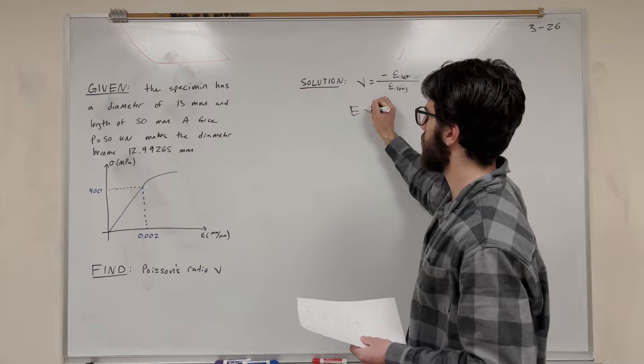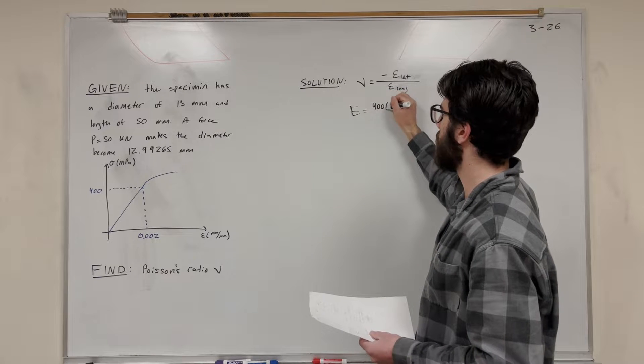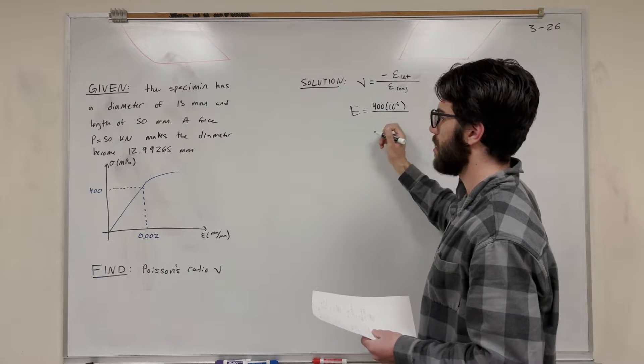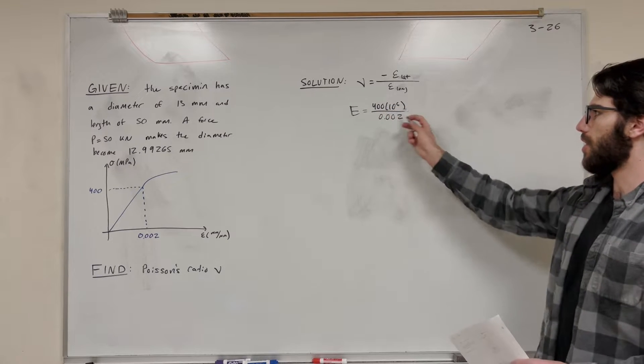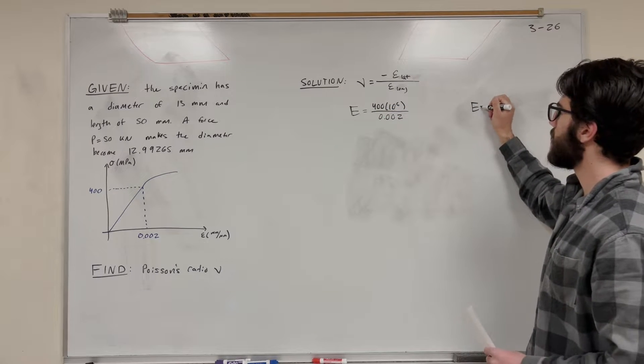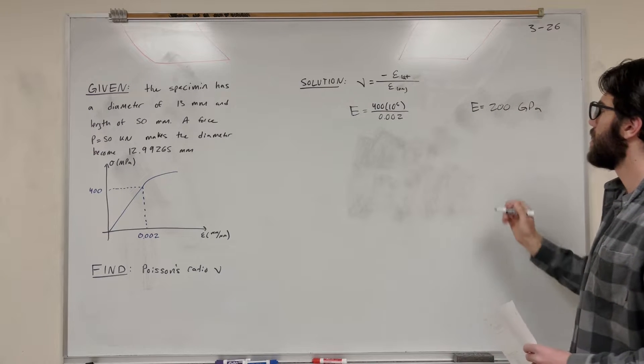So right now, let's solve for E. E is just the slope of this line. So we know it's 400 megapascals, so 400 times 10 to the 6 over 0.002. All right, so you solve for E here and you get that E is equal to 200 gigapascals. So that's what we have now.